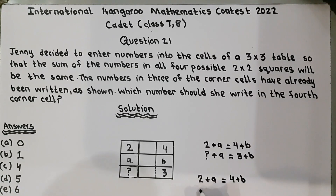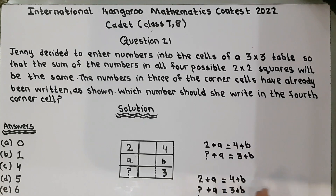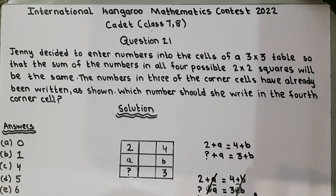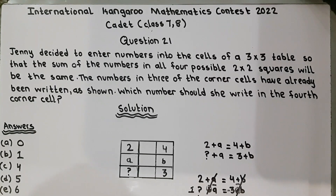Now we have the two equations: 2 plus a equals 4 plus b, and question mark plus a equals 3 plus b. If we subtract the second from the first, plus b and minus b cancel out. So 4 minus 3 gives us 1, and question mark equals 2 minus 1, which equals 1.